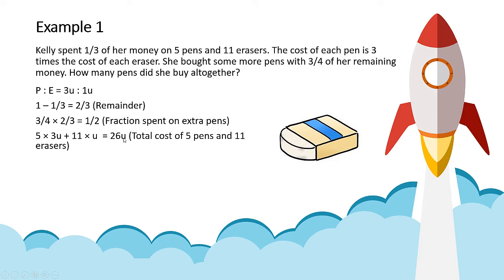Because 1 eraser is 1 unit, you get a total of 26 erasers—so 26 units. And so you can record, how much money did she spend on this? It's one third. She spent one third of her money on these 26 units.